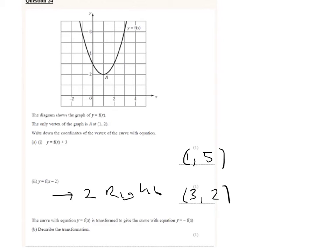Now finally, we're asked to describe the transformation when y of f of x is transformed to give the curve y equals minus f of x. Y equals minus f of x. And this always gives you a reflection in the x-axis.